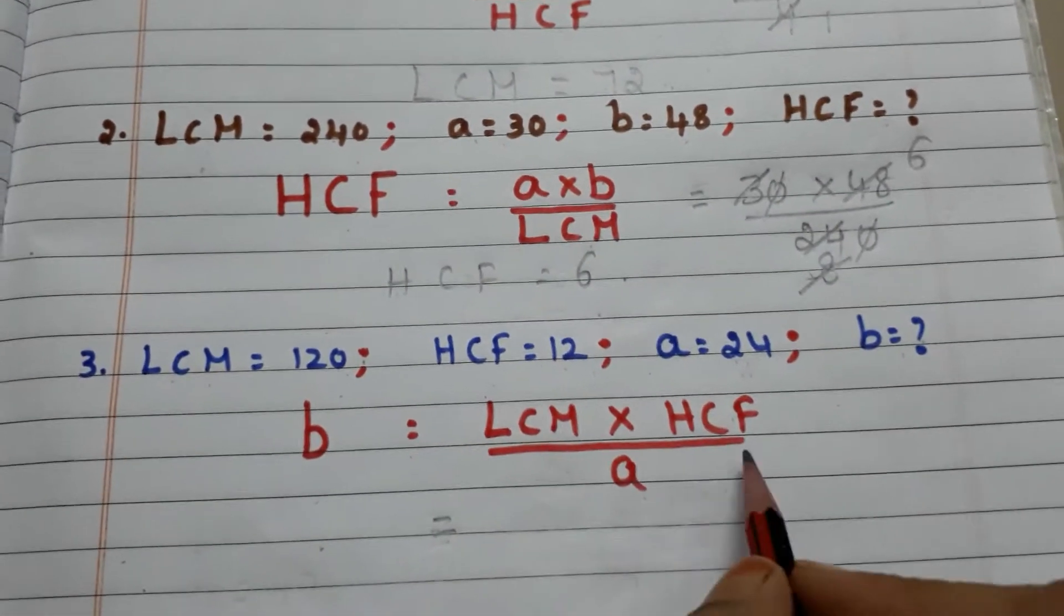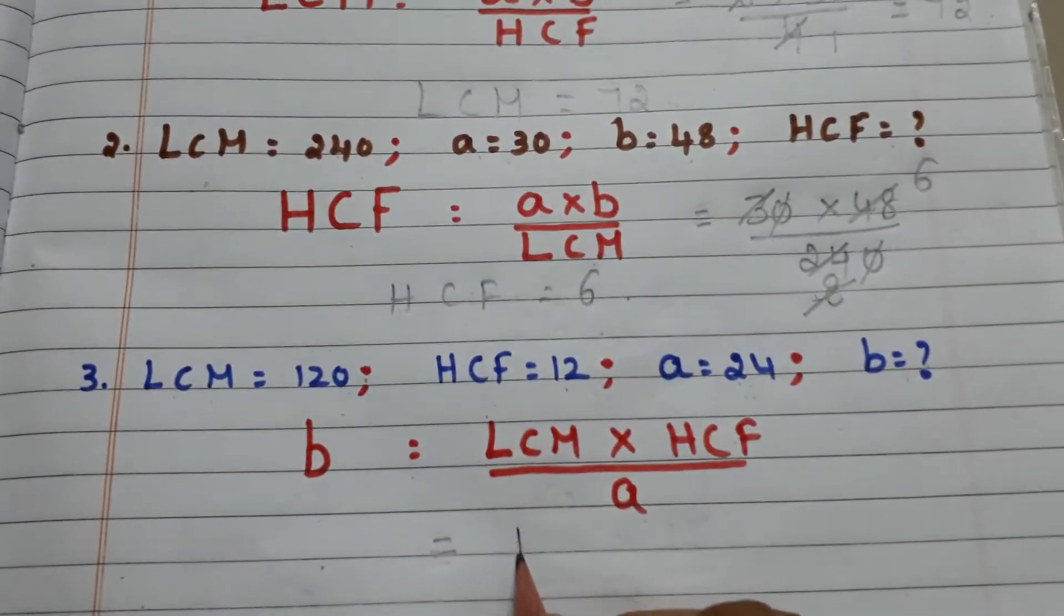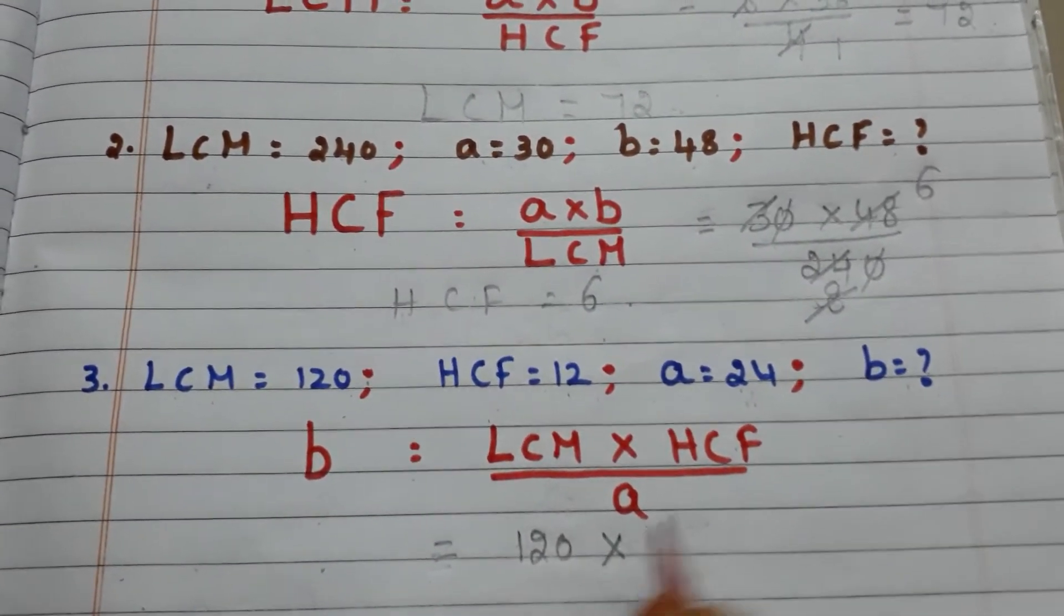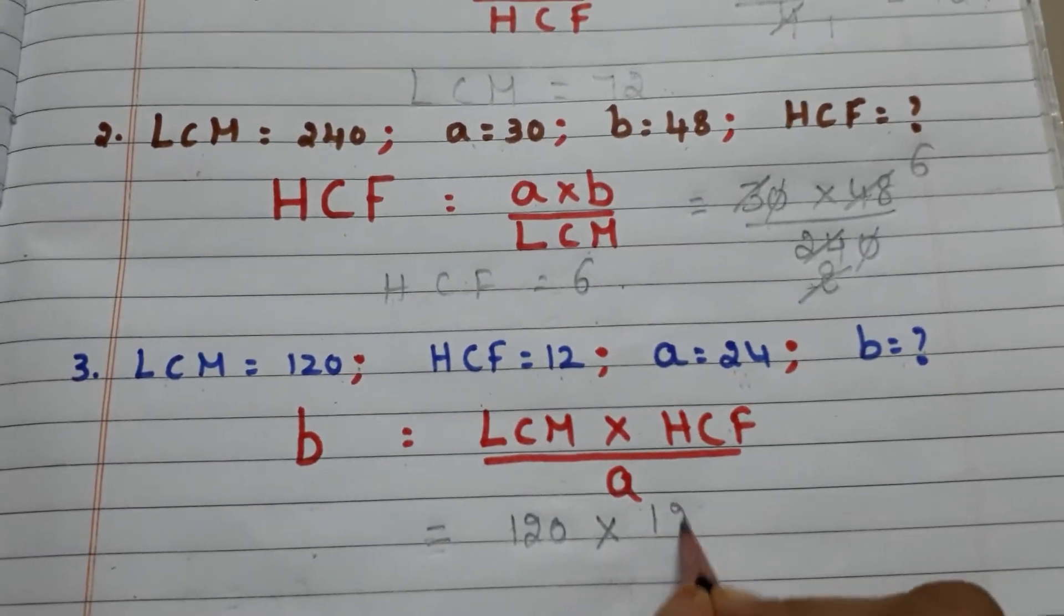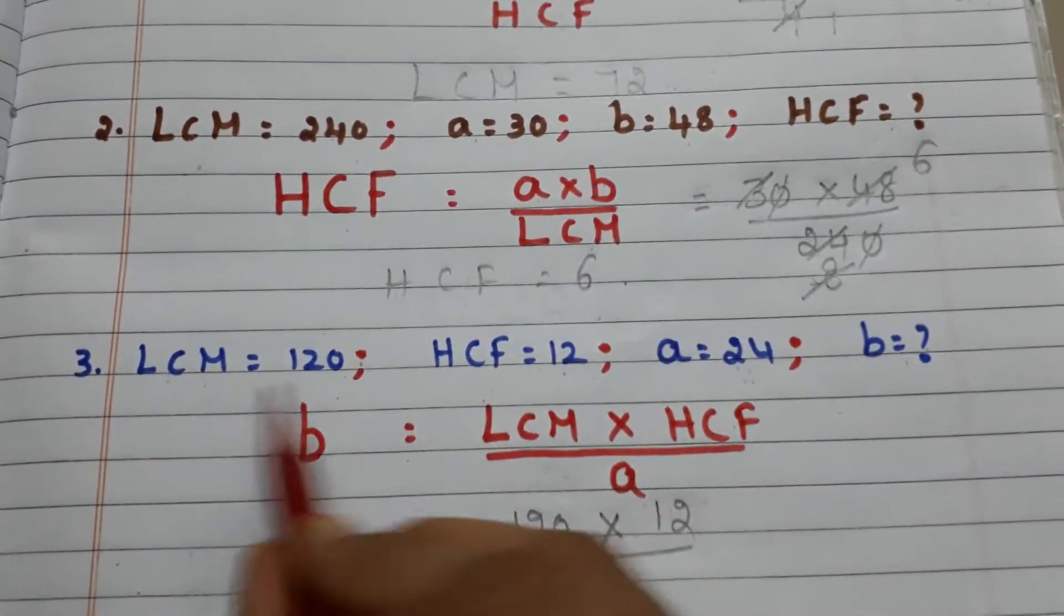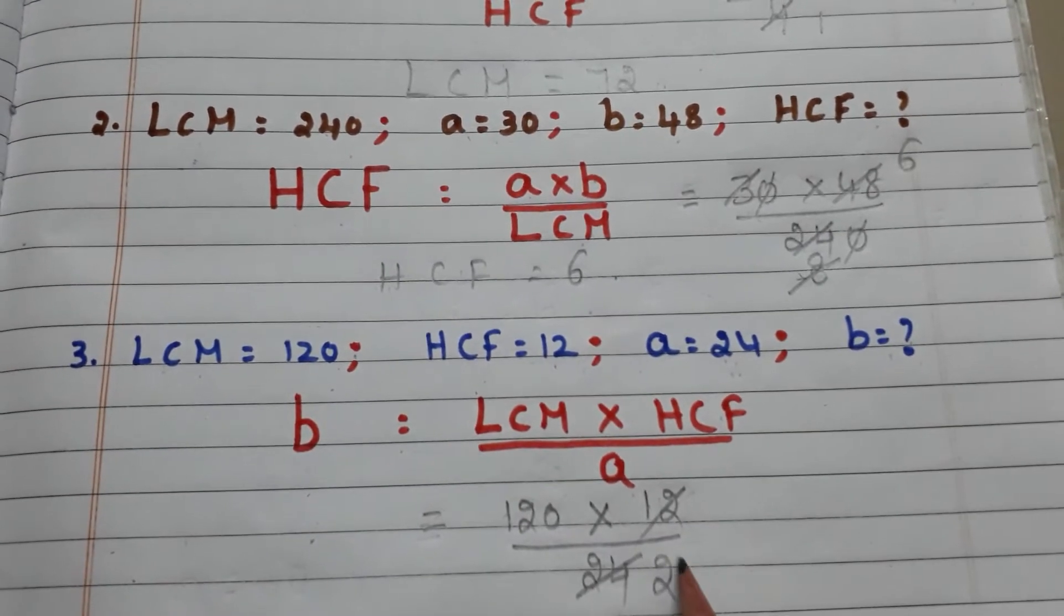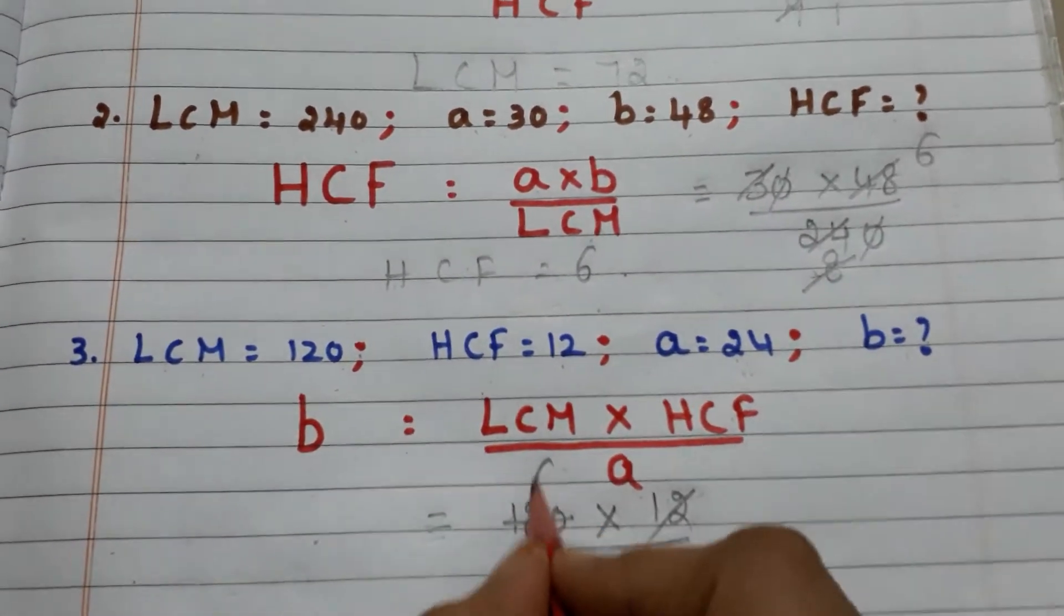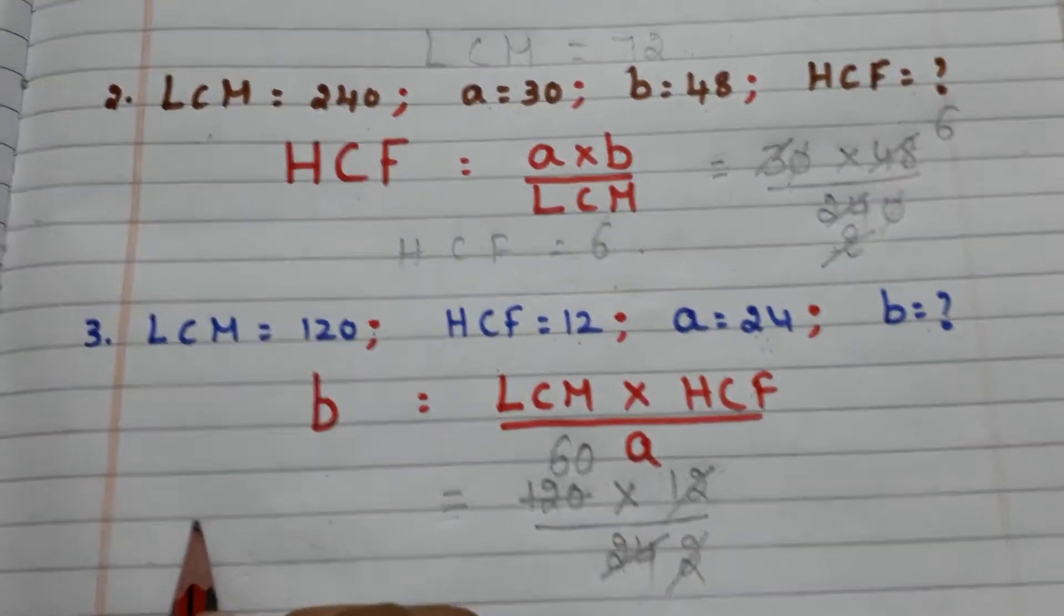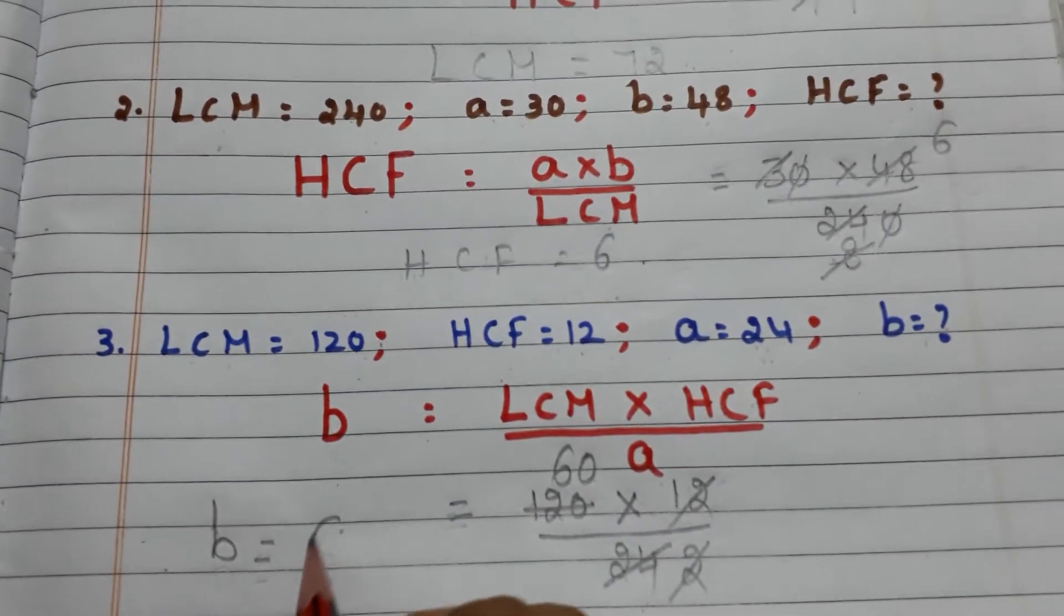Now apply the values in the formula. What is LCM? 120. Into what is HCF? 12. By what is a? 24. 12 by 24 is 2, and 2 into 120 is 60. So the second number b equals 60.